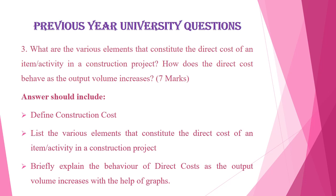Construction cost is basically classified into two categories: direct costs and indirect costs. This question is related to direct costs. First, state what is construction cost and the different types of construction cost. Then define what is direct cost and list out the various elements that constitute the direct cost. Then explain the behavior of direct cost — which may be fixed, variable, or semi-variable — with graphical representations showing how direct cost changes as output volume increases.